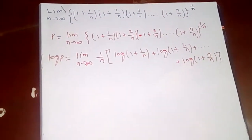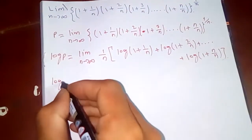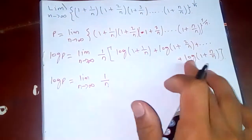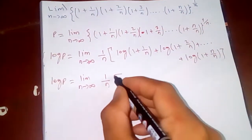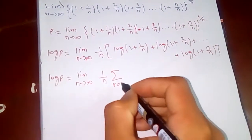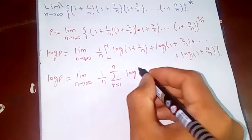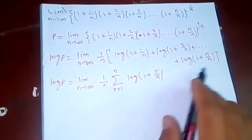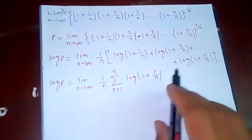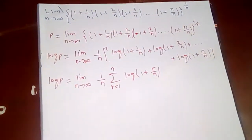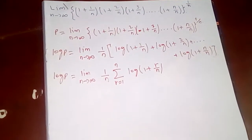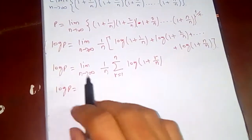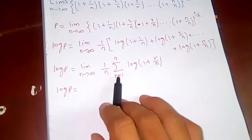Now we can write this in terms of summation notation. Instead of writing it out, let's use the symbol: the sum from r equal to one to n of log of one plus r by n. If you plug r equal to one up to r equal to n, you get the same result as before.